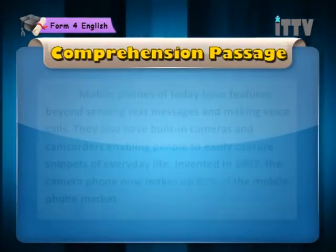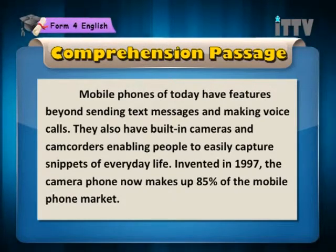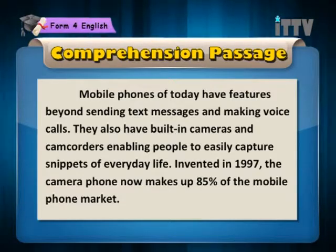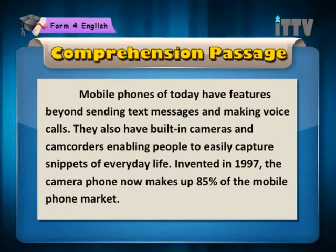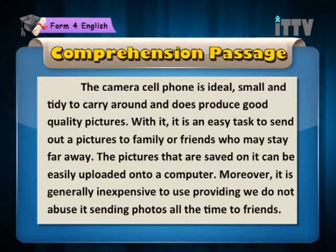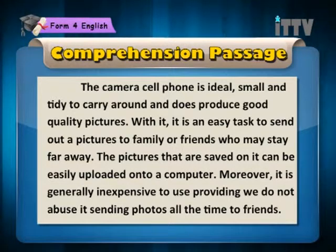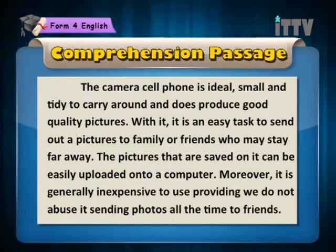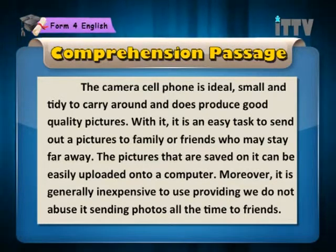Comprehension passage. Mobile phones of today have features beyond sending text messages and making voice calls. They also have built-in cameras and camcorders enabling people to easily capture snippets of everyday life. Invented in 1997, the camera phone now makes up 85% of the mobile phone market. The camera cell phone is ideal, small and tidy to carry around and does produce good quality pictures. With it, it is an easy task to send out a picture to family or friends who may stay far away. The pictures that are saved on it can be easily uploaded onto a computer.